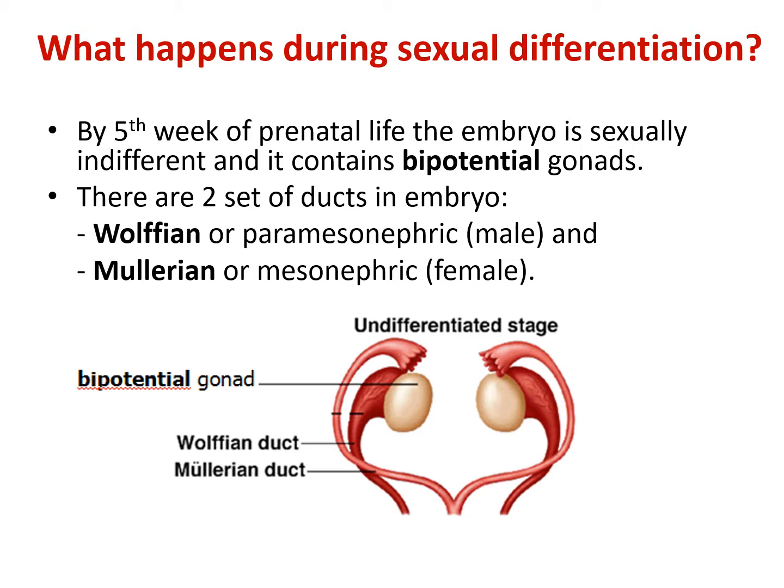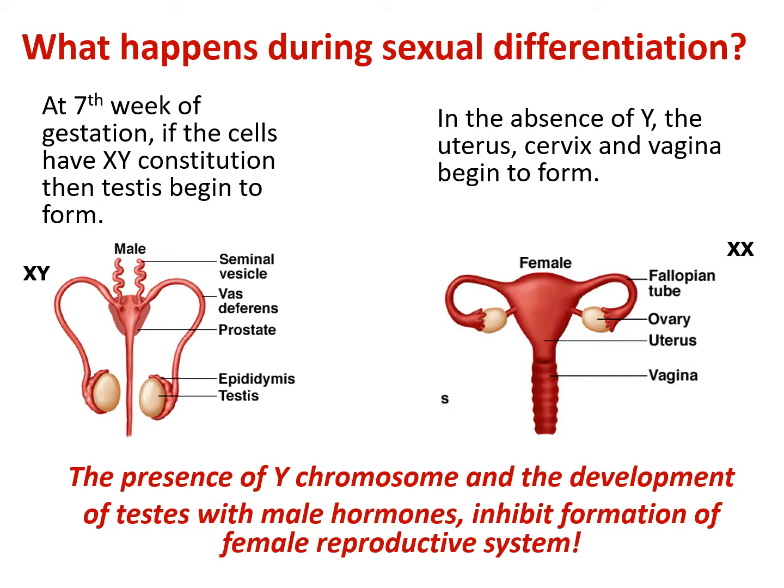What happens during sexual differentiation? When the embryo is conceived, until about five weeks of prenatal life, the embryo is sexually indifferent — it is neither male nor female, and it contains bipotential gonads. There are two sets of ducts in the embryo: Wolffian for male and Müllerian for female. At a certain point of development, the embryo will turn either male or female.